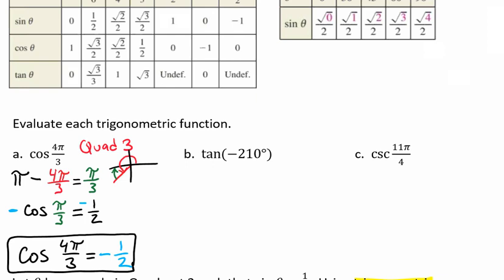Let's take a look at the tangent of negative 210 degrees. We'll start off by graphing that. We'll graph negative 210 degrees and we're going to want the reference angle.